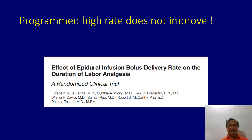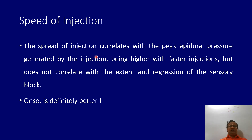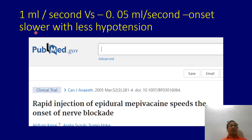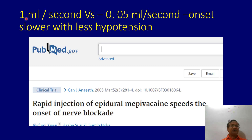A programmed high rate does not necessarily improve the block. Higher injection speed does not correlate with the extent and regression of sensory blockade, but onset is relatively faster. At around 1 ml per second, onset is slower with less hypotensive potential. What I give is around 0.2 to 0.5 ml per second — not much hypotensive potential.